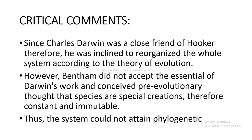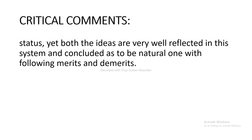Next I am going to discuss about the critical comments. Since Charles Darwin was a close friend of Hooker, it was inclined to reorganize the whole system according to the theory of evolution. However, Bentham didn't accept Darwin's work and conceived pre-evolutionary thought that species are special creations, therefore constant and immutable. Thus the system could not attain phylogenetic status, yet both ideas are well reflected in this system, concluded as natural, with the following merits and demerits.